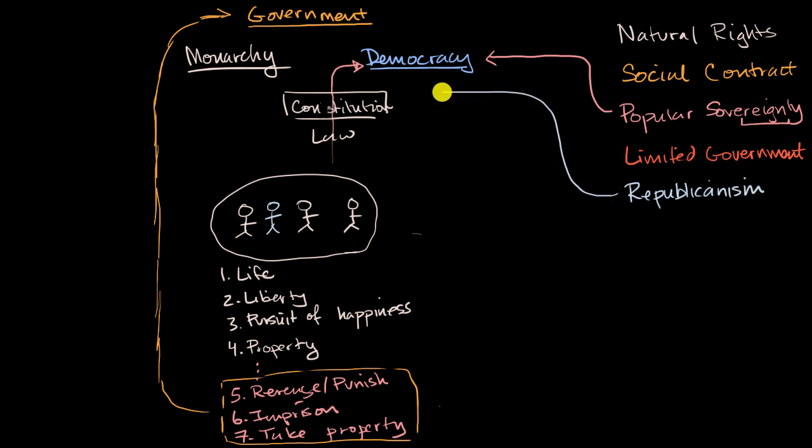This limited government and republicanism are often strongly associated with each other. And that's why the United States today, and many countries that have in fact modeled themselves after the United States, refer to themselves as democratic republics. And so with just these terms, you have been well armed to better study, not just the US government, but governments in general. And in future videos, we will see how some of the founding documents of the United States, like the Declaration of Independence, like the United States Constitution, really embody these ideas. See you next time.